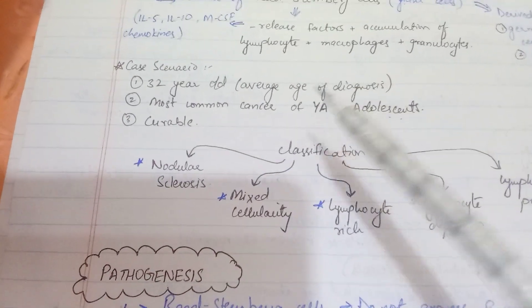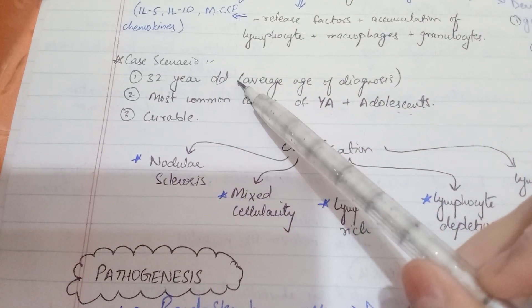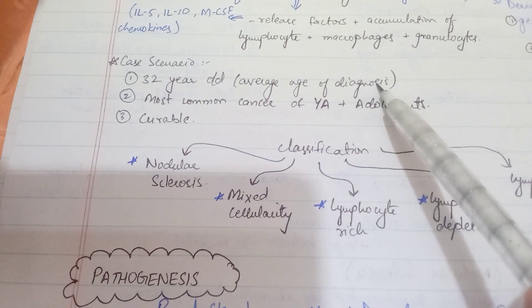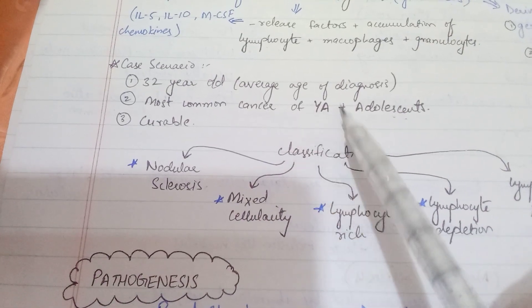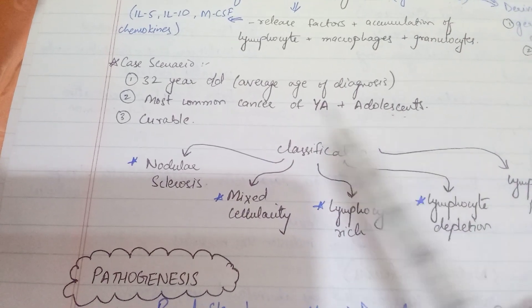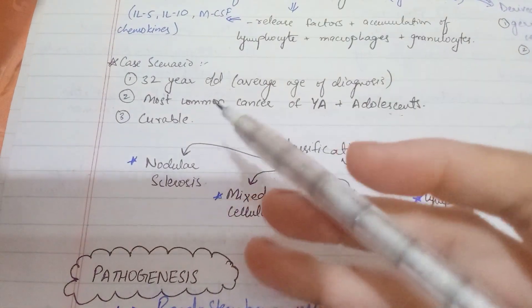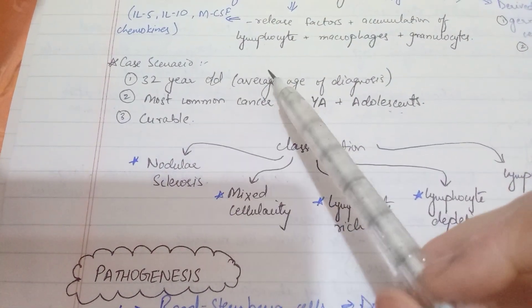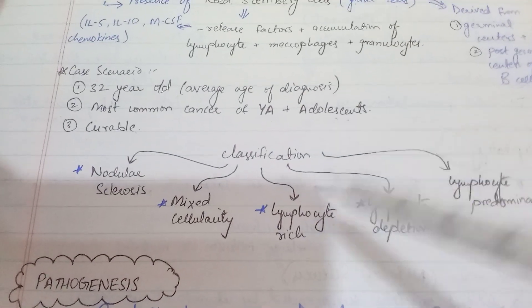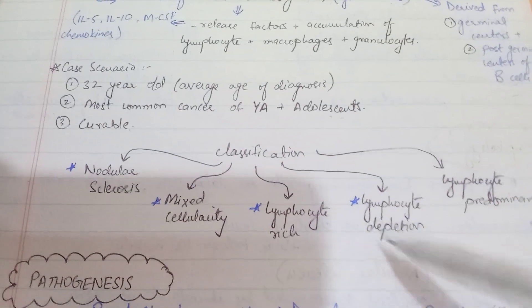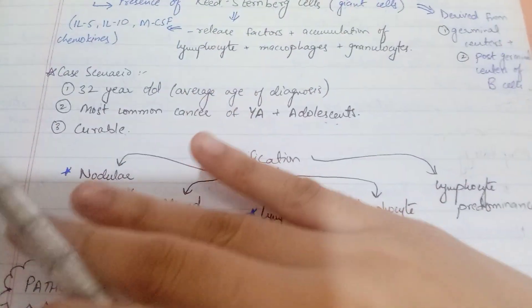In a typical case scenario, the age of diagnosis is very important. The average is around 32 years old. Young adults and adolescents are the most commonly affected. The good thing is the prognosis is excellent and it is highly curable.